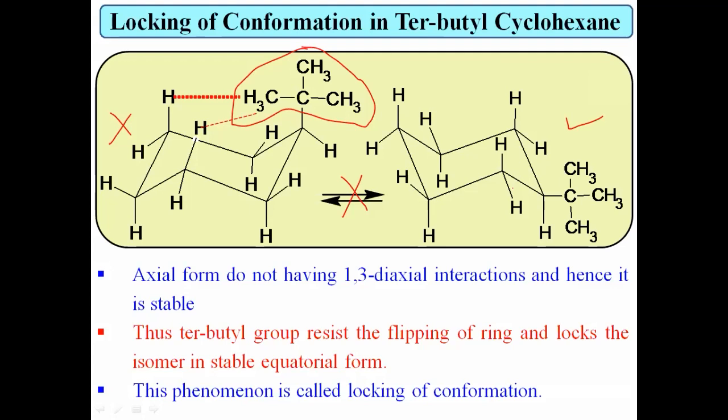This phenomenon is called locking of conformation — an important term. To summarize this topic: in the introduction we studied Baeyer strain theory, which explained the stability of lower cycloalkanes. However, this theory has some limitations — it does not explain the stability of higher cycloalkanes like cyclohexane and cycloheptane. To overcome these limitations, a new theory called the theory of strainless rings was introduced, which explains the stability of higher cycloalkanes.